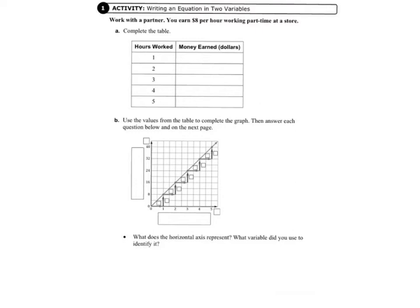Letter A, our job is to complete the table. Looking at the first row of the table, if we work one hour, we earn $8. So we put an 8 in the first box.